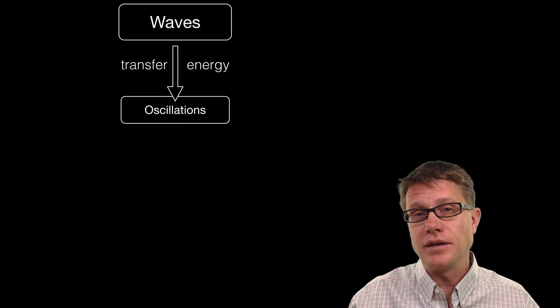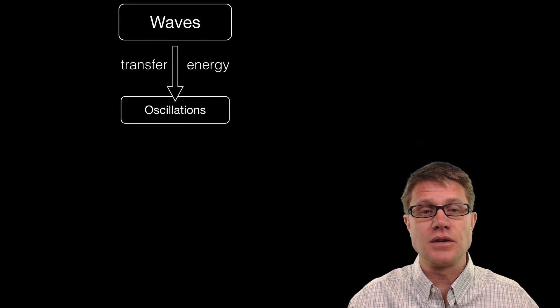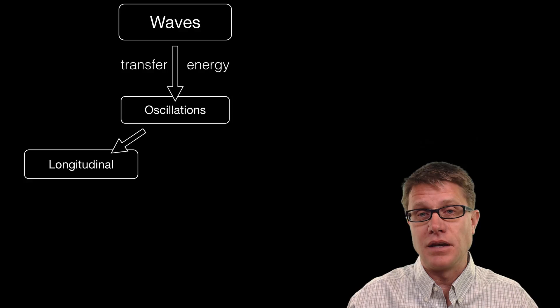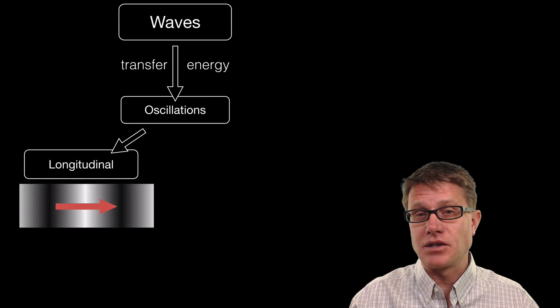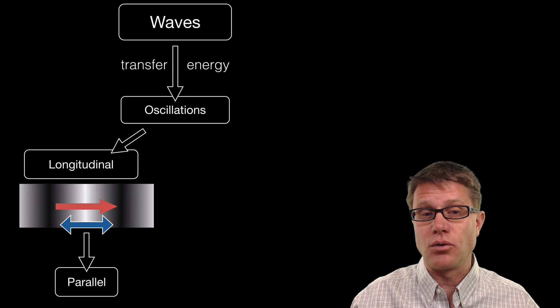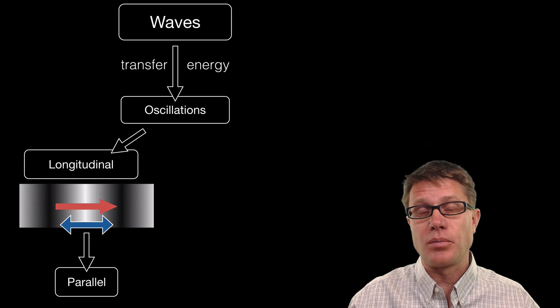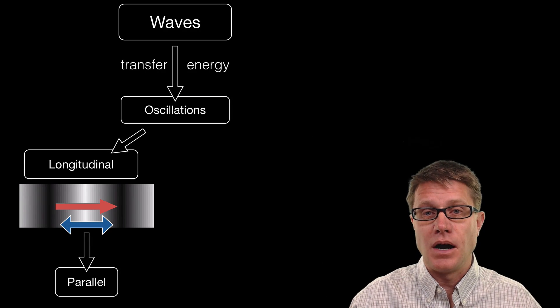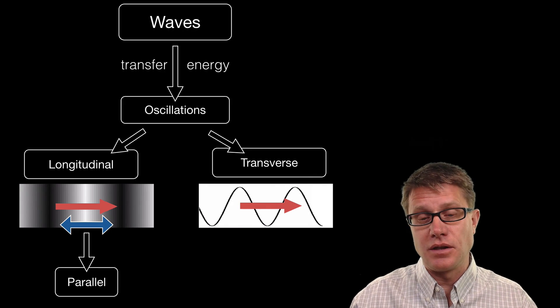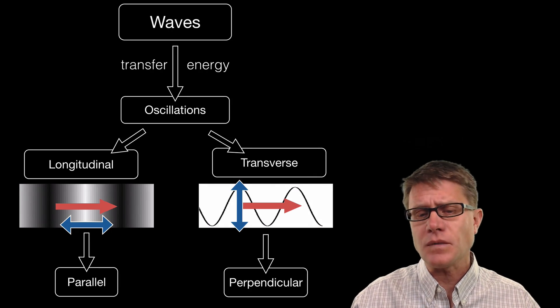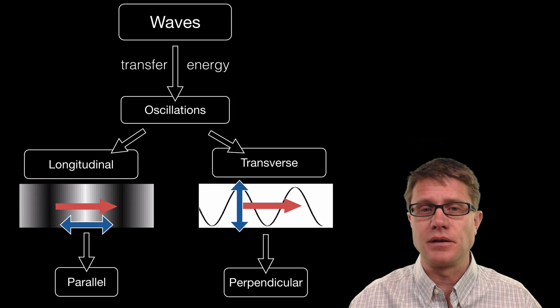And so waves are simply ways to transfer energy through disturbances or through oscillations. And they come in two forms. We have longitudinal waves. That is where the oscillation is in the same direction or parallel to the propagation or the movement of the wave itself. We also have transverse waves. In transverse waves the motion in this case would be left to right, but the oscillation is going to be perpendicular to that.